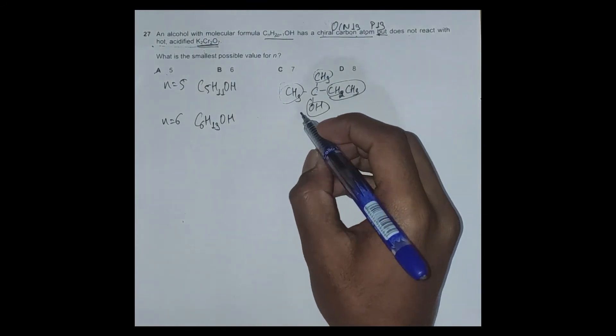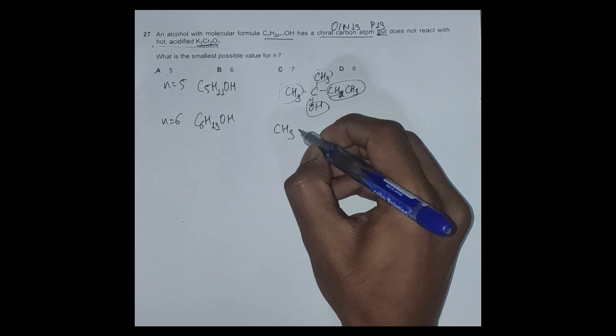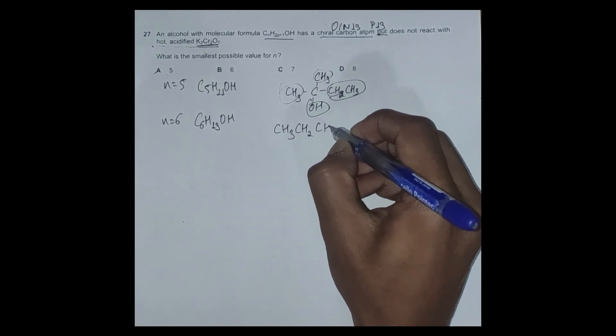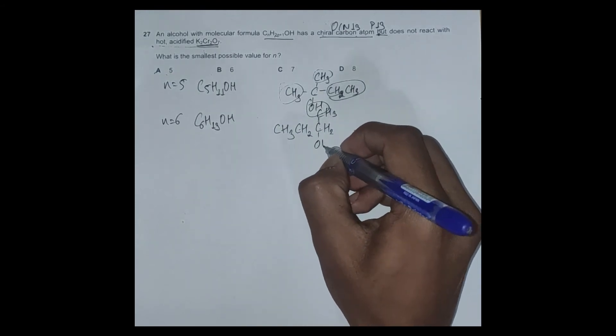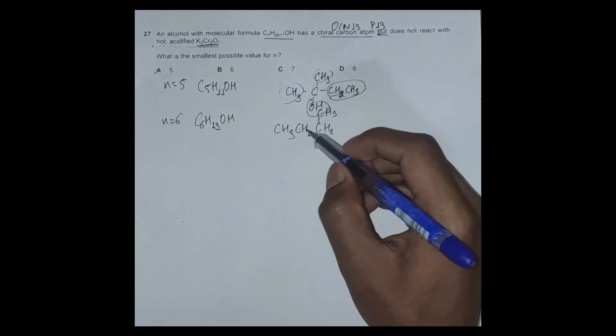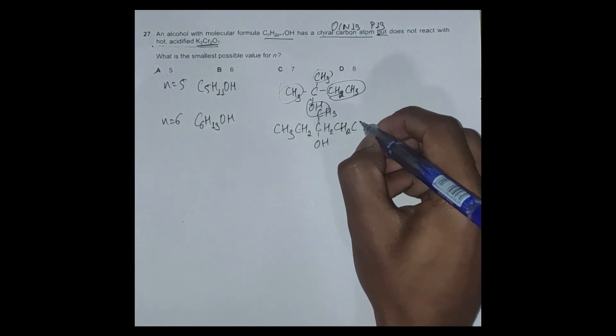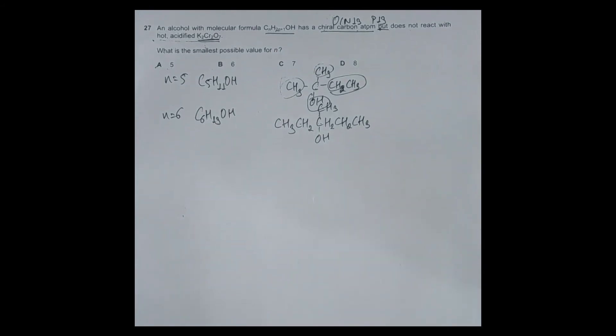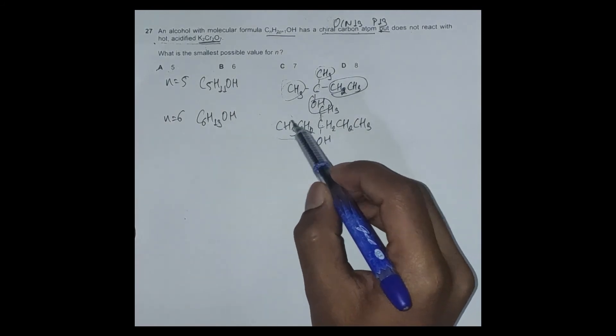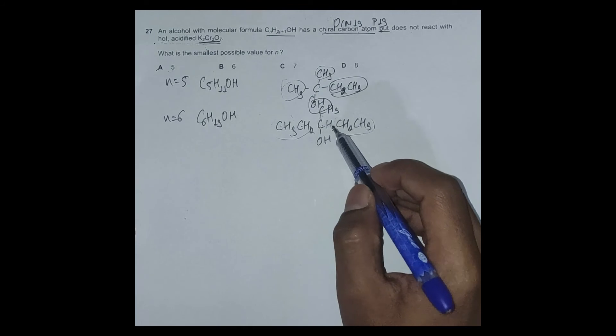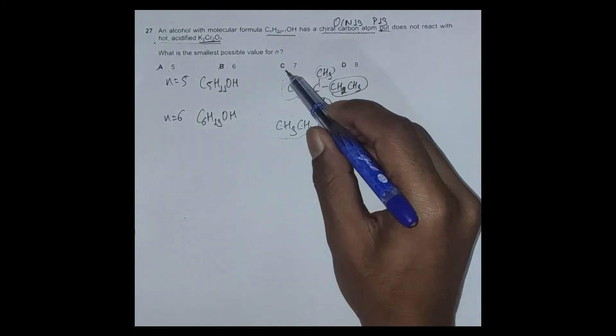Now we'll try to have a branched carbon chain: CH3-CH2-CH2 and let's have CH3 over here. OH should be here because it has to be tertiary alcohol. Now let's see whether this particular isomer satisfies the conditions given or not. We have OH, CH3, so far so good, but unfortunately we have CH2CH3 on both sides for this carbon atom. So even option B is not correct.